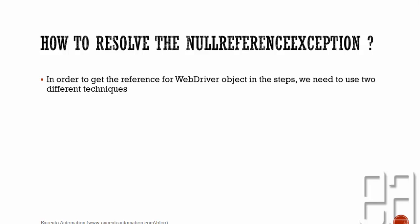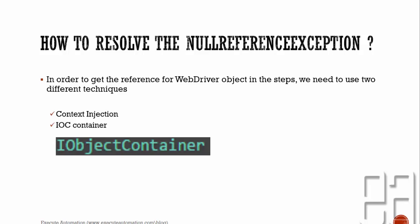One technique we have already discussed in this BDD video series, which is context injection. We are going to use the context injection technique to get the object reference from one place to another. But we also need to register the WebDriver object into our code execution, and that can be done using what is called an IoC container — inversion of control container — using the IObjectContainer interface available from SpecFlow itself. Context injection is otherwise called dependency injection, which we discussed in our previous video.